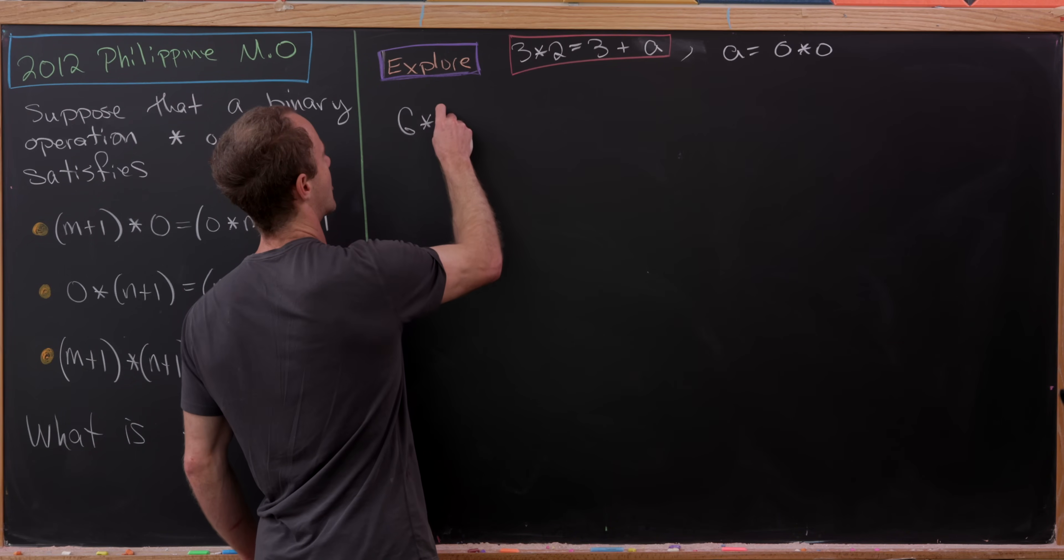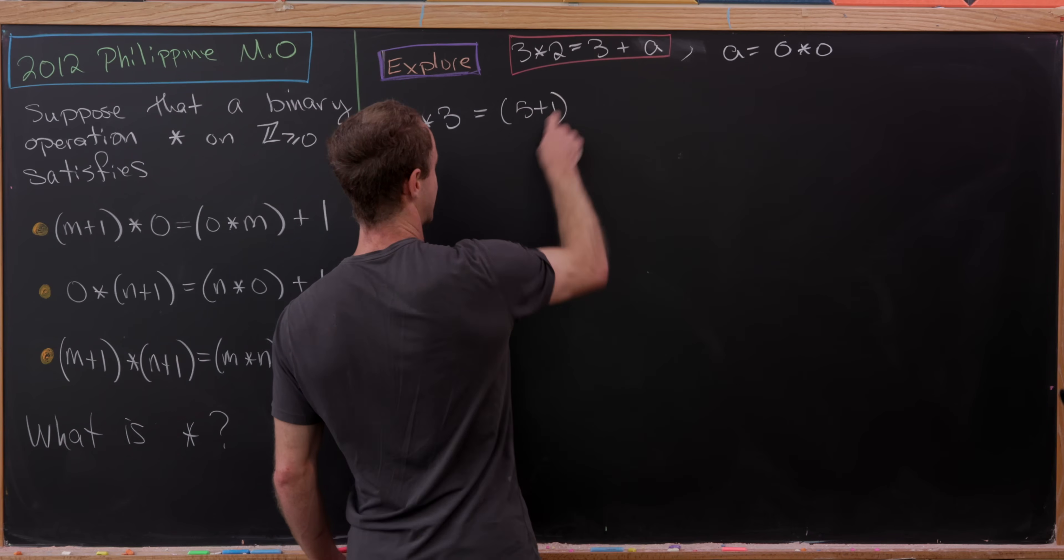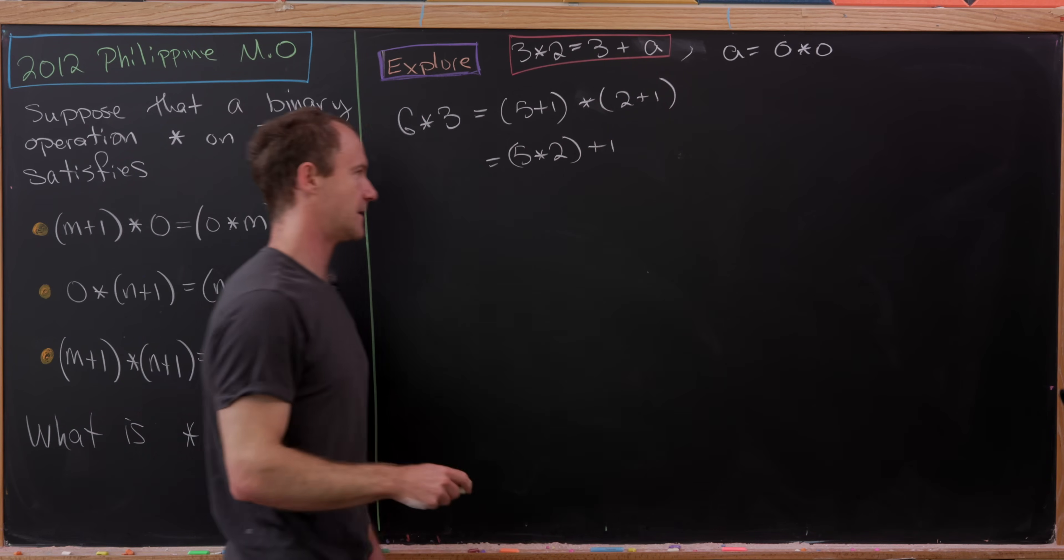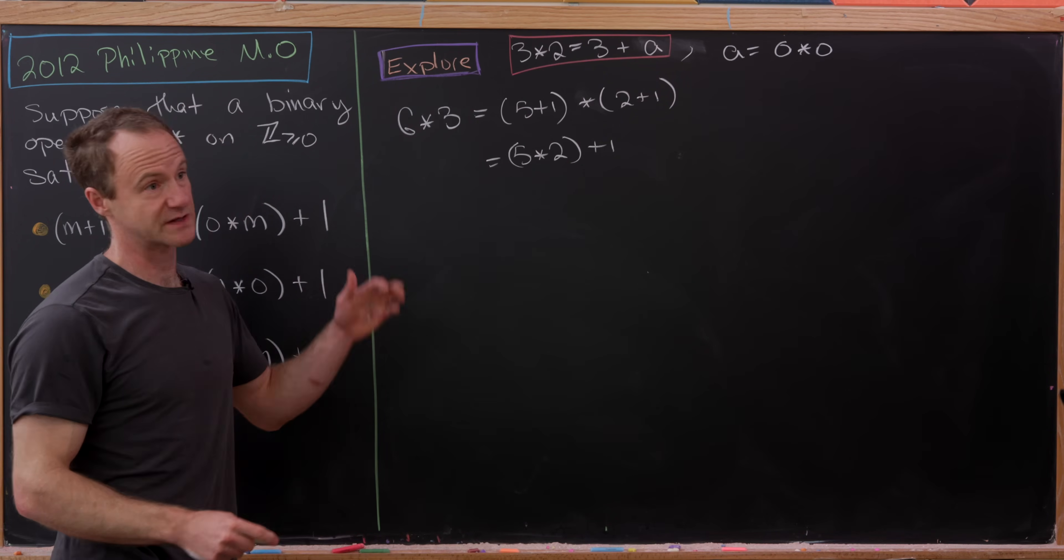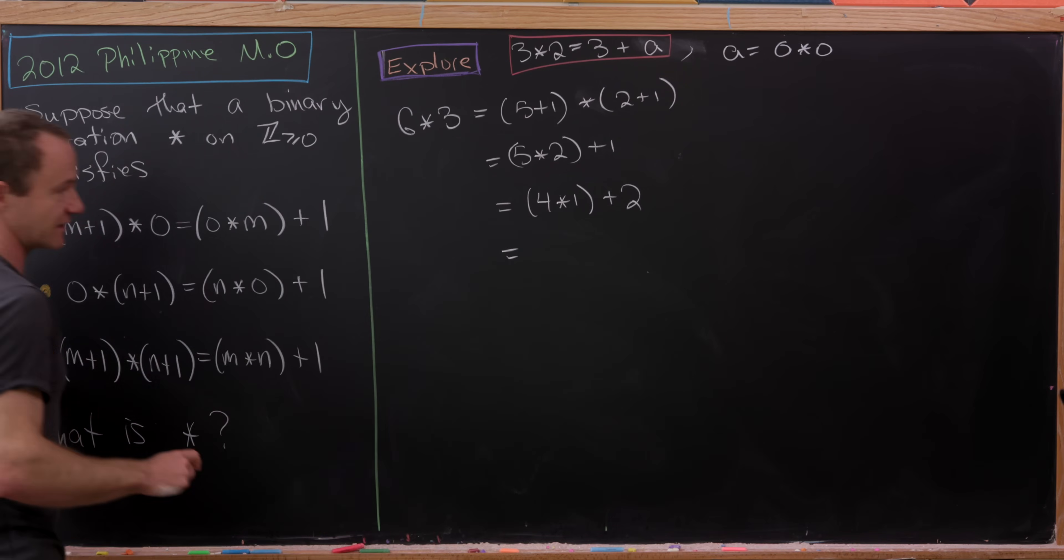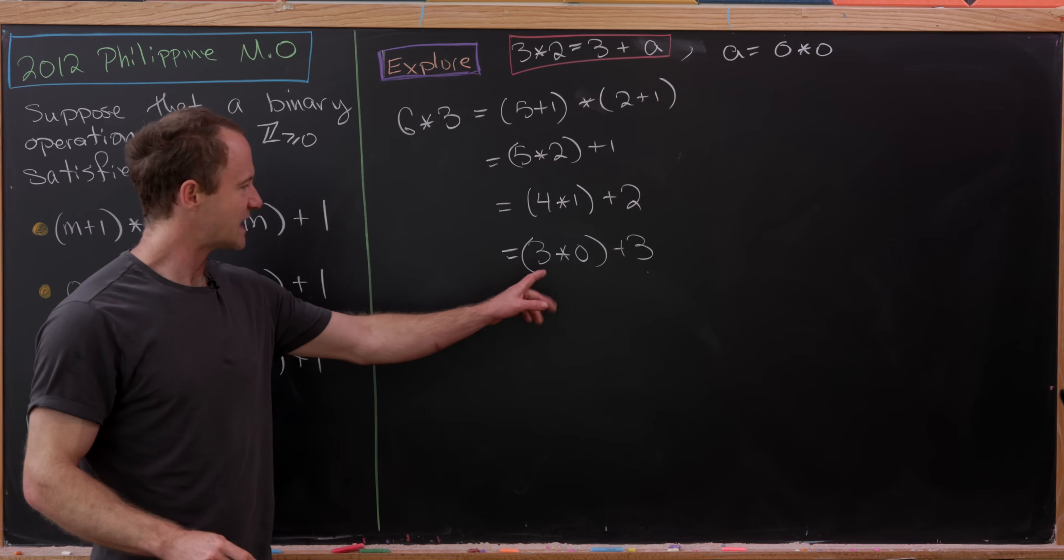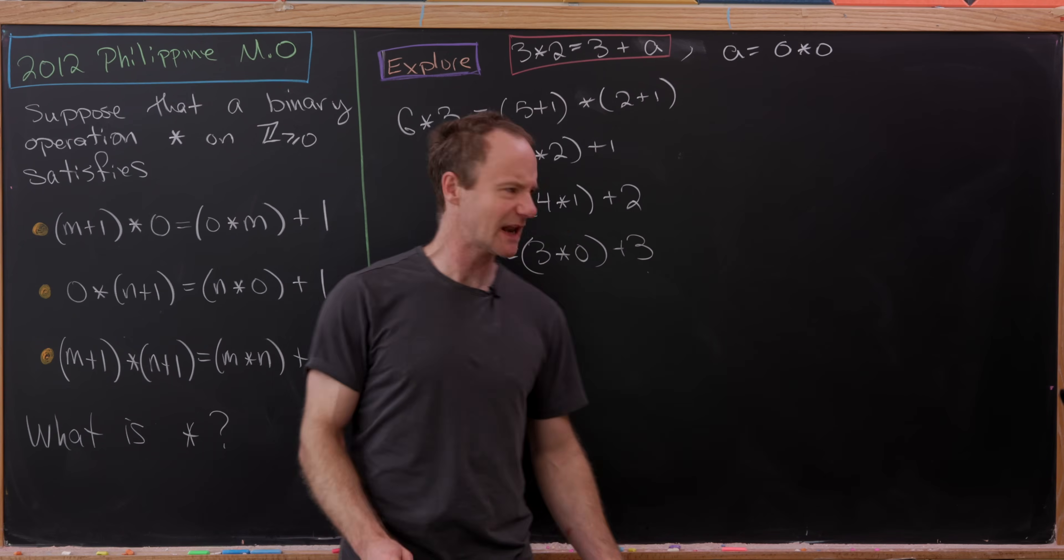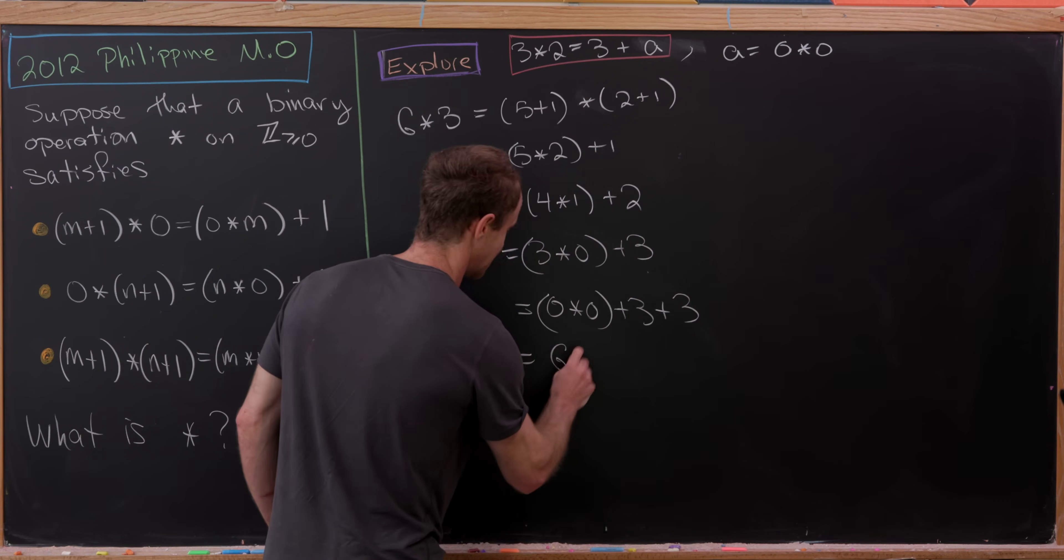Let's say we do 6 star 3. We'd like to descend this a bit at a time. We'll first view this as (5+1) star (2+1), which gives us 5 star 2 + 1. I think we can apply this rule again without going through the process of writing this as (4+1) and (1+1). This should give us 4 star 1 + 2. Applying this rule one more time gives us 3 star 0 + 3. Now we can descend this number 3 by one using the rule that we have to add one. We can do that three times until we get 0 star 0 + 3 + 3. Notice that's just 6 + a.